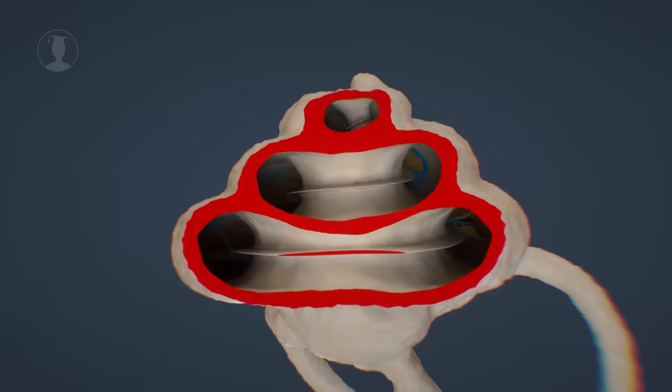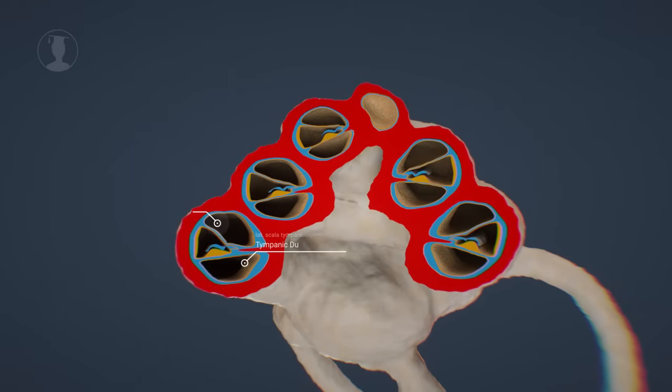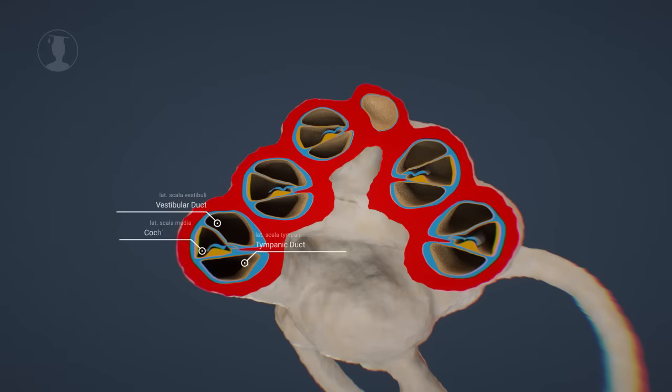A section through the cochlea clearly shows the two cavities. Another cavity, called scala media, is located between these two ducts and is also filled with a fluid. Between the scala media and scala tympani resides the basilar membrane, which enables us to hear and has important properties.